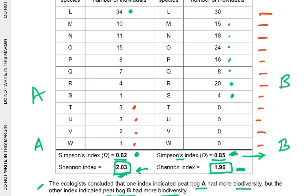The other point is that peat bog B has a smaller range of species abundance, and a higher Simpson's index than peat bog A. So you could talk about species abundance and species richness — peat bog A has a higher number of species, while peat bog B has a smaller range of species abundance and a higher Simpson's index.